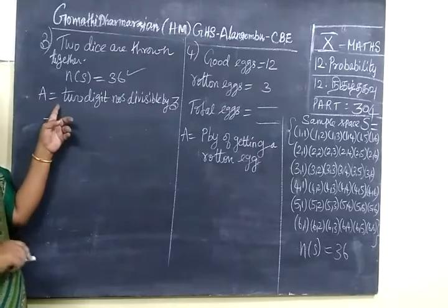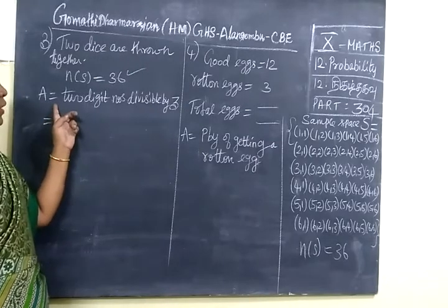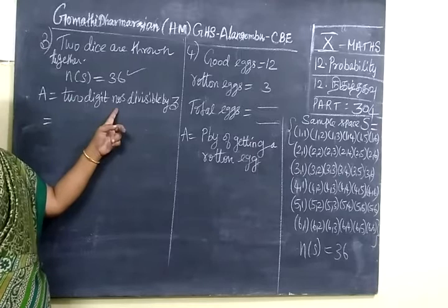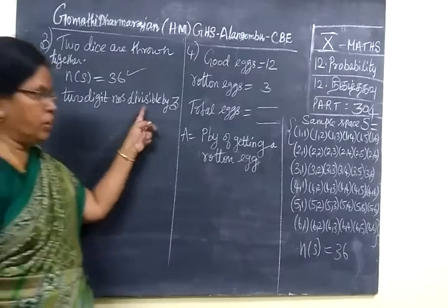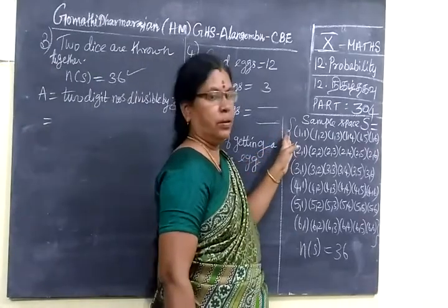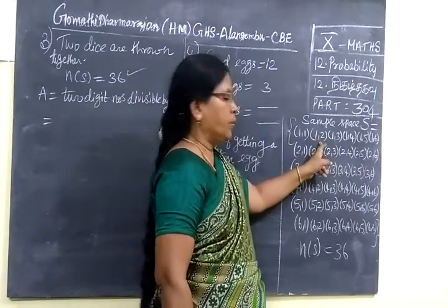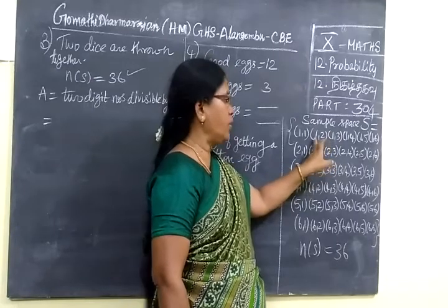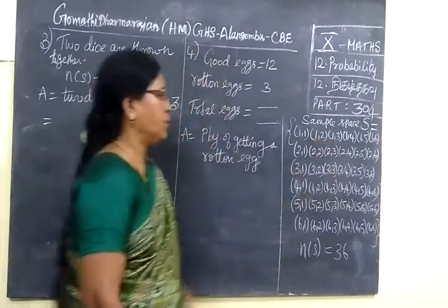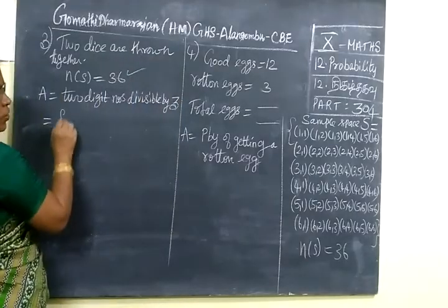Now we are finding event of getting two digit numbers which are divisible by 3. So in the sample space you are selecting the numbers turned up which are divisible by 3.